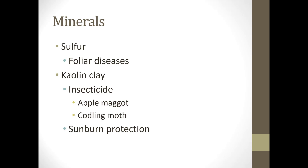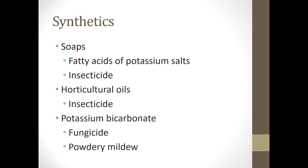Minerals such as sulfur can be used for foliar diseases. Kaolin clay can be used as an insecticide — it's used for apple maggot and codling moth, and also works for sunburn protection by coating foliage with a clay material. Soaps — specifically fatty acid potassium salts — can be used as insecticides; Safer Soap is a well-known example. Horticultural oils can also be used as insecticides, and potassium bicarbonate can be used as a fungicide — it's very effective on powdery mildew.